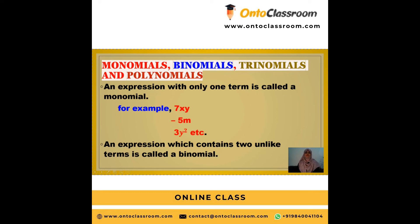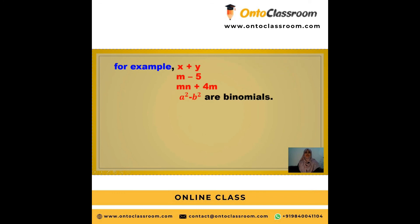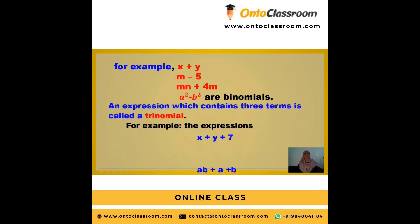An expression which contains two unlike terms is called a binomial. For example, x + y — x and y are two unlike variables — is a binomial. M - 5, and 4m + 4 are also examples of binomials. a² - b² is another binomial: a² is one variable of degree 2 and -b² is another variable of degree 2, and their combination of two unlike terms makes it a binomial.